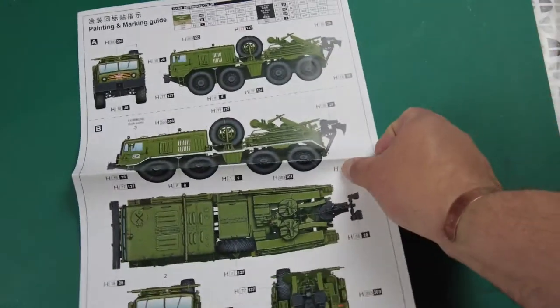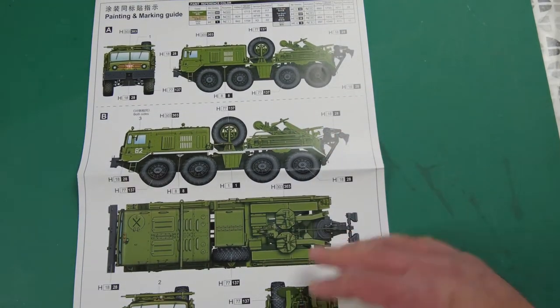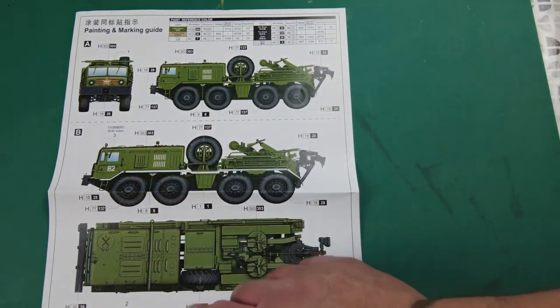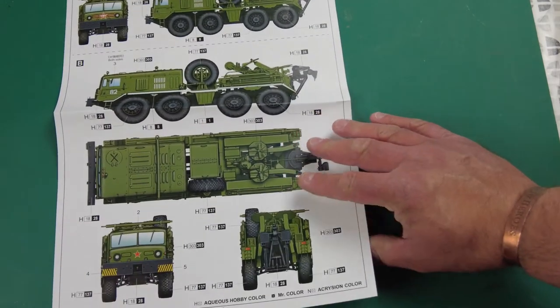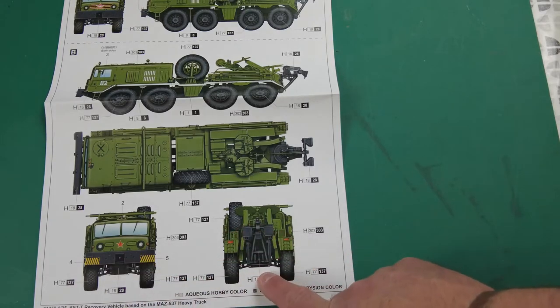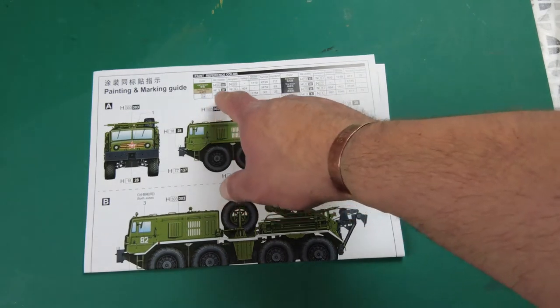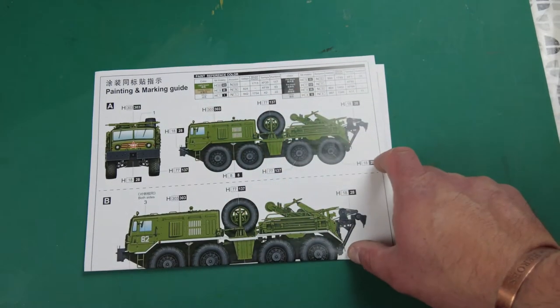So, color callouts. We have got a Russian green vehicle, both with the Russian star on it. For A, and then B, you've got overall green with white fenders, and you've got the yellow and black chevrons and the Russian star on the front. They're giving you color callouts for Mr. Hobby, Vallejo, Model Master, Tamiya, and Humbrol, so you've got a good selection of paints for completing the vehicle.